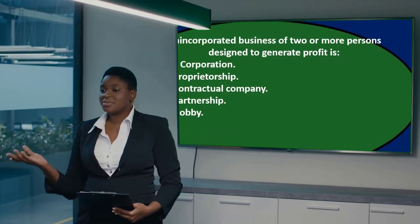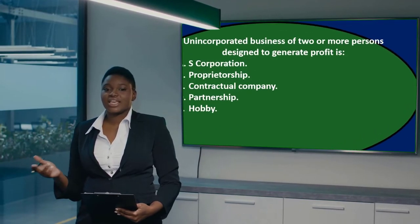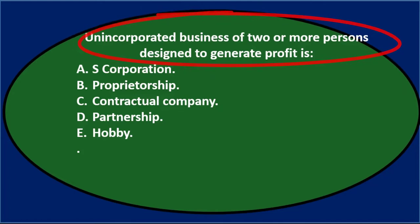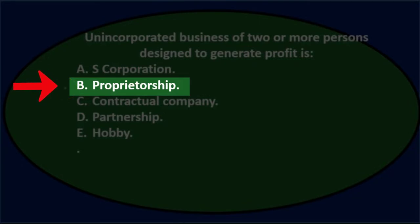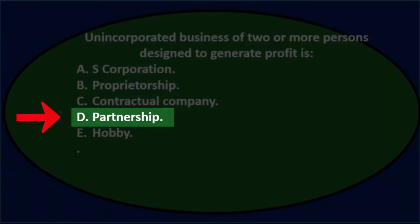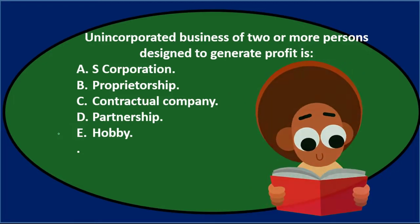In this presentation we will take a look at multiple choice questions related to partnerships. First question: an unincorporated business of two or more persons designed to generate profit is: A) S corporation, B) proprietorship, C) contractual agreement or contractual company, D) partnership, E) hobby.